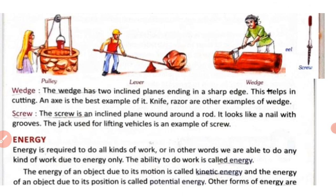Now our next topic is energy. Energy is required to do all kinds of work. In other words, we are able to do any kind of work due to energy only. The ability to do work is called energy.